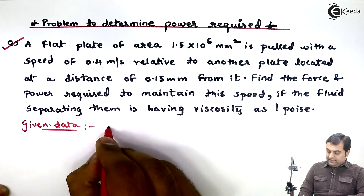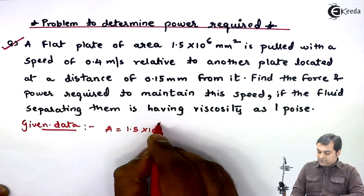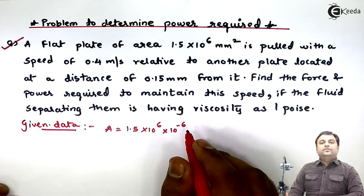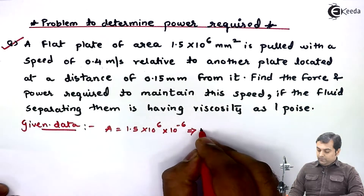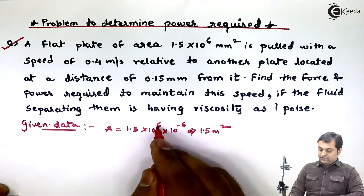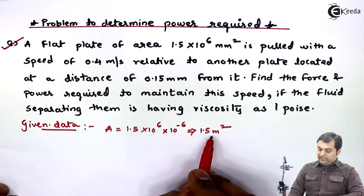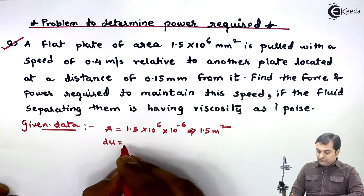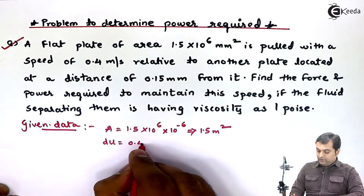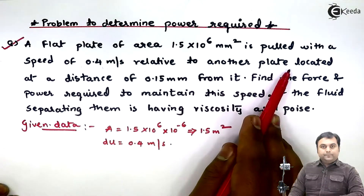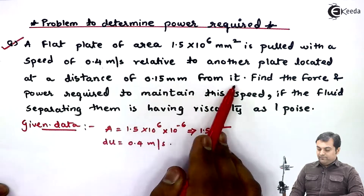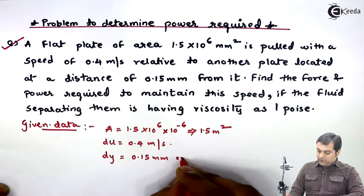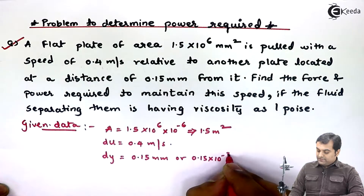Now I'll write the data. Area A = 1.5 × 10⁶ mm². I'll multiply by 10⁻⁶ to convert to meter square, so A = 1.5 m², because 10⁶ and 10⁻⁶ cancel out. The velocity du = 0.4 m/s. The distance dy = 0.15 mm = 0.15 × 10⁻³ m.